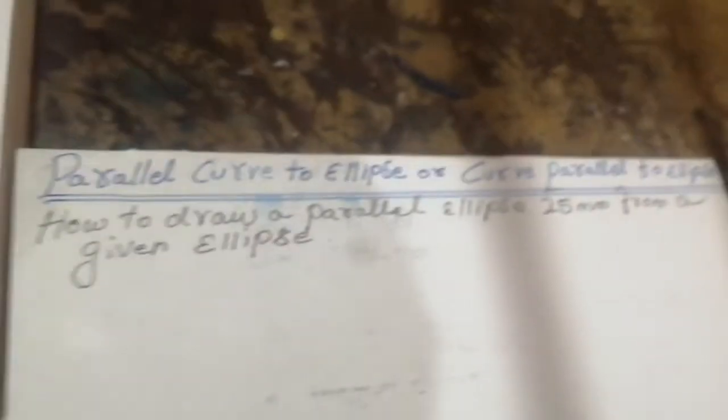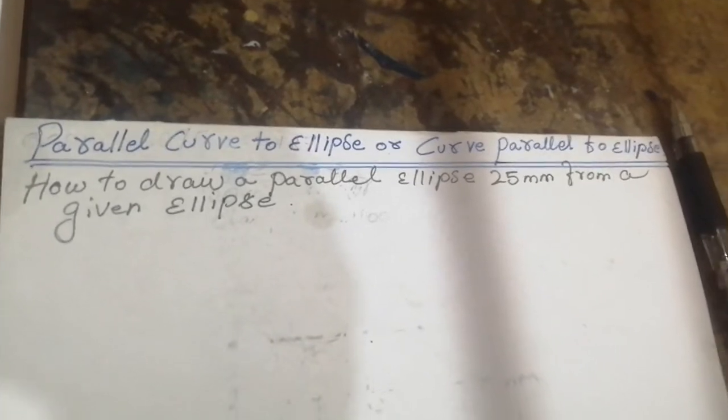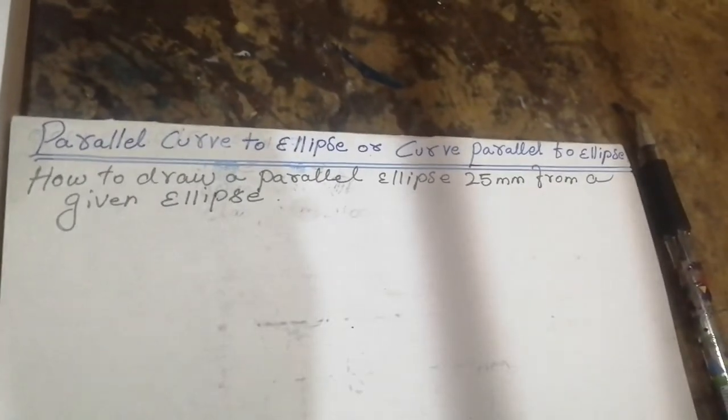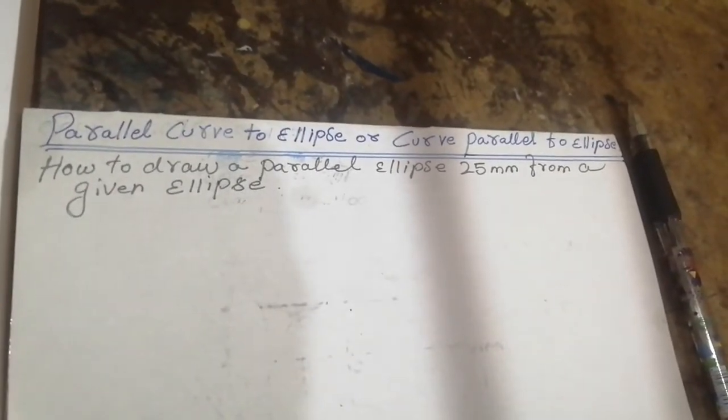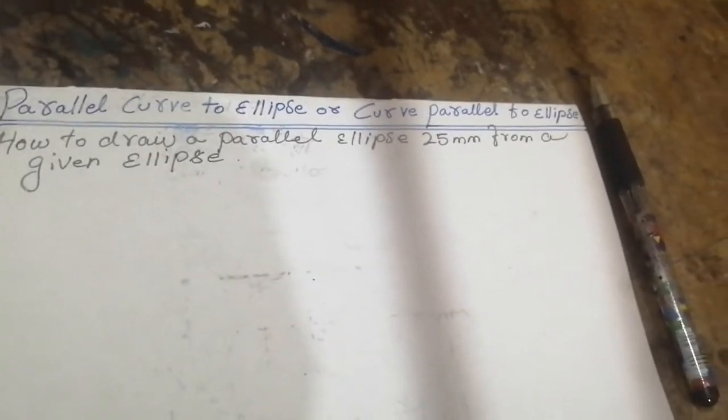The question is given like this: a parallel curve to the ellipse, or curve parallel to ellipse. How to draw a parallel ellipse 25mm from a given ellipse? I'll show how to draw. I have written more types of ellipse in the previous class. You can watch my videos.